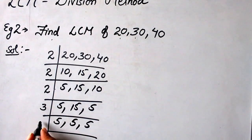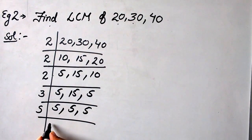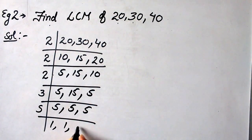Now, this will be divided by 5, which is again a prime number, giving us 1, 1 and 1.